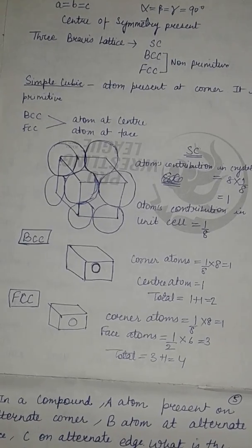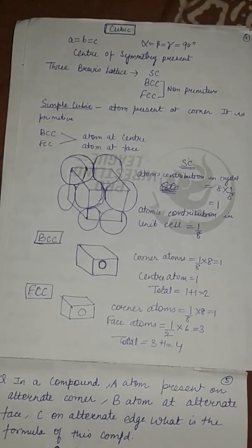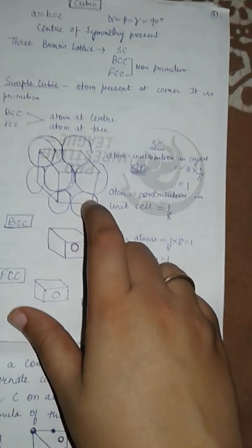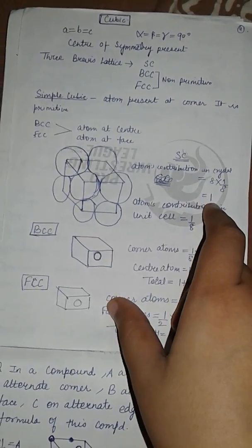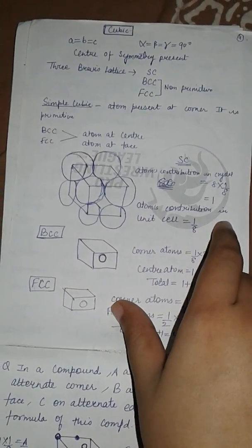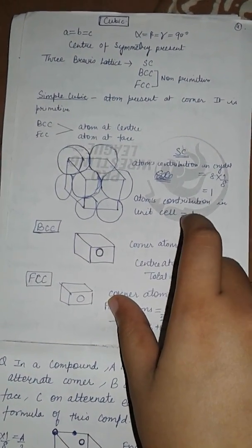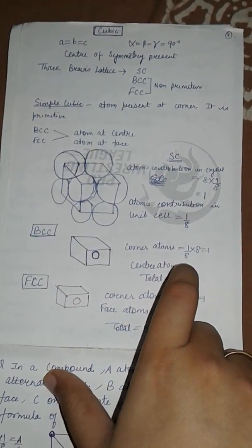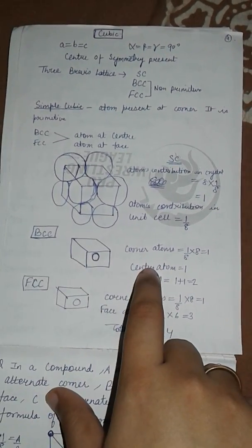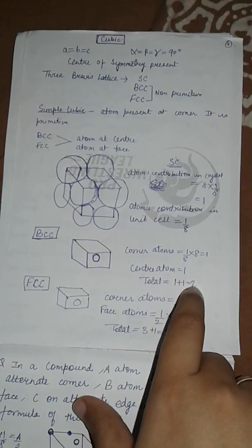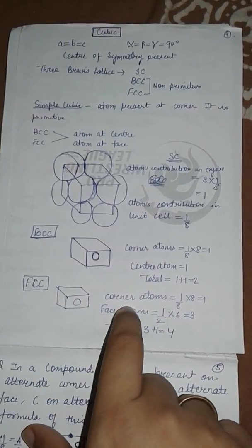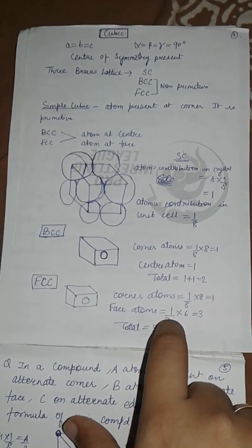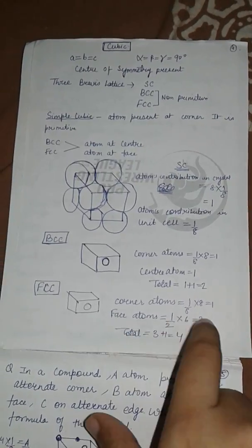In simple cubic, atoms are present only at corners. Each corner atom's contribution is one-eighth, and with eight corners the total contribution is one. In BCC, corner atoms contribute one-eighth times eight equals one, and the center atom contributes one, giving a total of two. In FCC, corner atoms contribute one, and six face atoms each contribute one-half, so one-half times six equals three, giving a total of four.